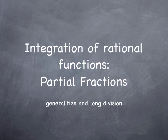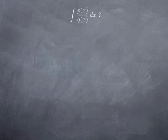In this module, we're going to look into techniques to integrate rational functions, that is, quotients of two polynomials. This kind of technique is referred to as integration by partial fractions. We want to integrate rational functions — in other words, a quotient of polynomials — where P and Q are two polynomial functions.